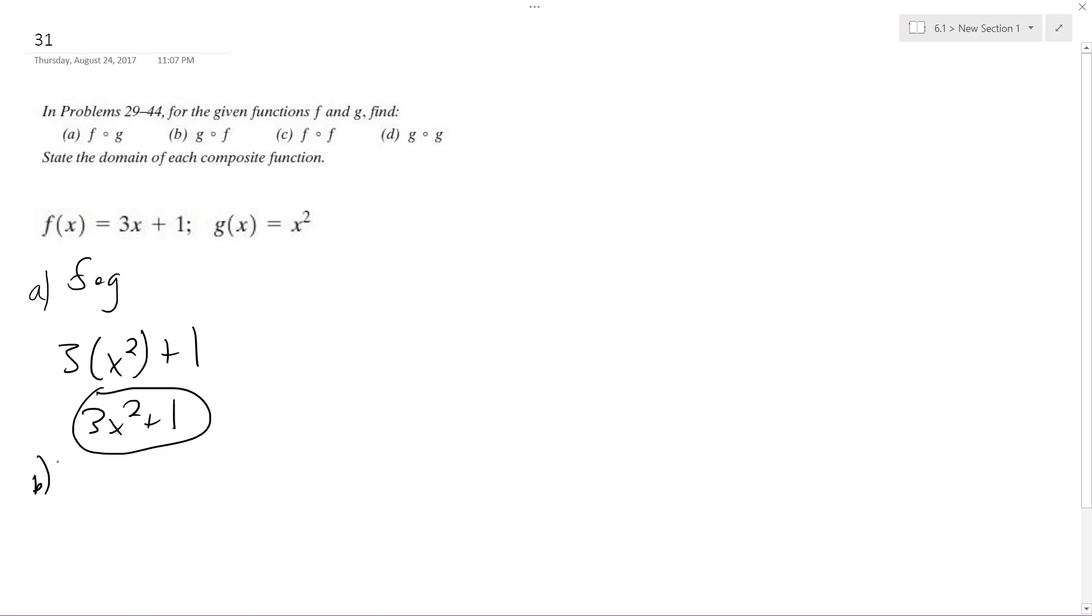Part b, g∘f, so we get quantity 3x plus 1 squared. You can probably just leave it like this. I mean if you want to FOIL it out, it's 9x² plus 3x plus 3x plus 1, so 9x² plus 6x plus 1. But it's fine how it is.